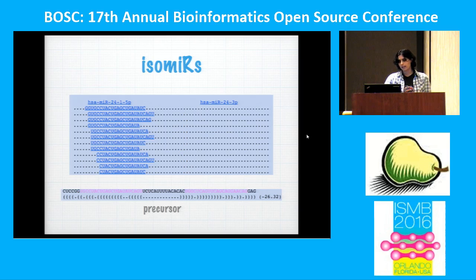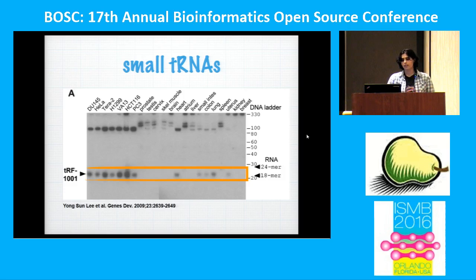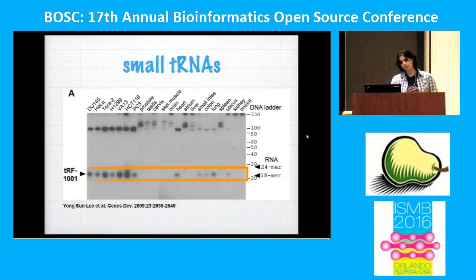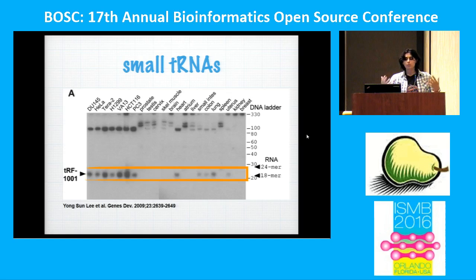Another kind of small RNA comes from tRNA — tRNA-derived small RNAs — which have been discovered in the last two years following the emergence of sequencing technology. You can see here in the orange box a 20-nucleotide tRNA-derived small RNA that is quite highly expressed in cancer cell types but not much expressed in normal cells, so people are starting to study their function.